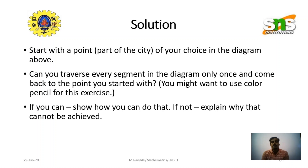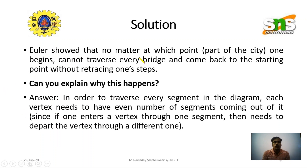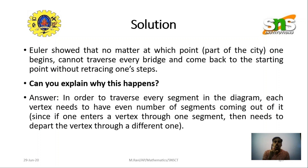Euler showed that no matter at which point one begins, one cannot traverse every edge and come back to the starting point without retracing one's steps. That means there is no solution to this particular problem — it is impossible to return to the starting point by traversing all the edges exactly once. At least one edge must be traversed more than once.